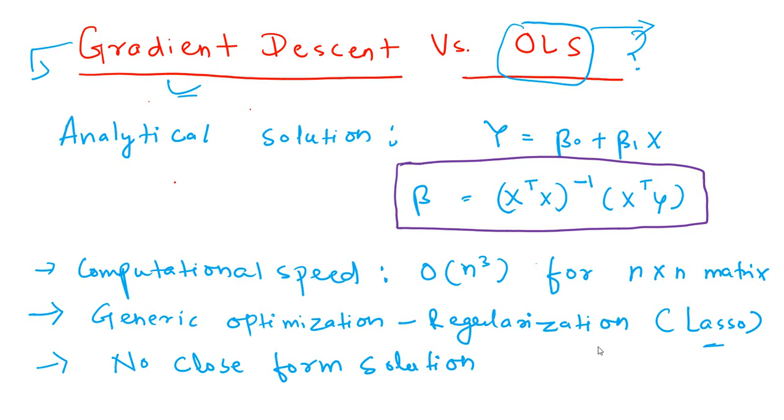Nobody really mentions ordinary least squares, so there is often confusion when people who are familiar with gradient descent hear about OLS and people who are familiar with OLS hear about gradient descent.